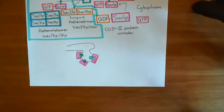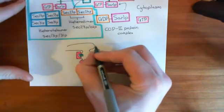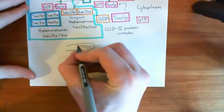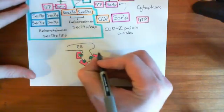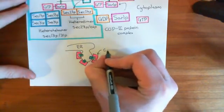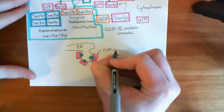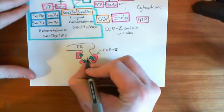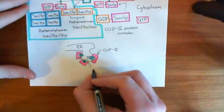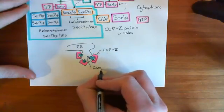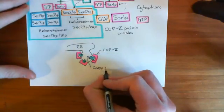In turquoise is the target, or the cargo protein. So this is ER, the endoplasmic reticulum. This is COP-2 here, the COP-2 protein complex. And this here is our cargo protein.